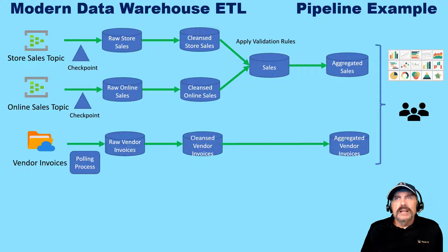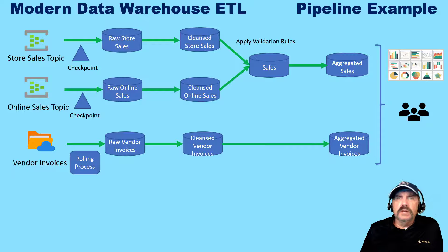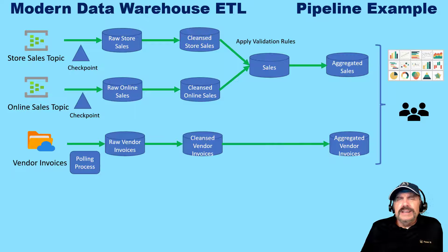From there, we're going to take it and cleanse it — get rid of nulls, make sure we don't have any bad values. We clean the data and put it into a cleansed table. Then we want to merge our store sales with our online sales, so we take those two tables, do a merge, and put them in the sales table. That's the point at which we define and apply our validation rules — we have to have code to not only identify situations where there's a violation, but also handle that violation. Now we have our sales table, ready for querying at the transactional grain level.